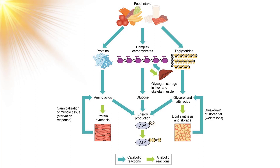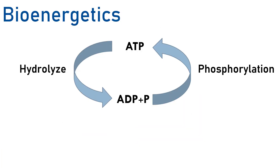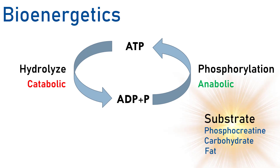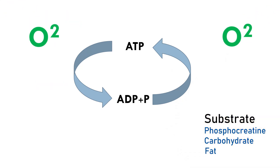All food is eventually broken down into proteins, complex carbohydrates, and fatty acids, which are further converted into amino acids, glucose, and so forth. The body uses these to convert ADP into ATP — the energy currency. You are never literally 'burning' calories, carbohydrates, or fat; your body uses those substrates to synthesize ATP. The three main substrates are phosphocreatine, carbohydrate, and fat, and oxygen availability determines which substrate is used and how much ATP is produced.